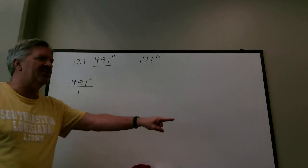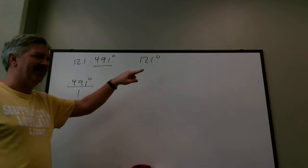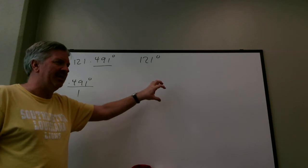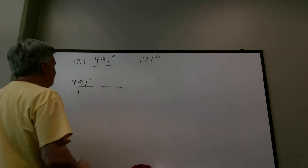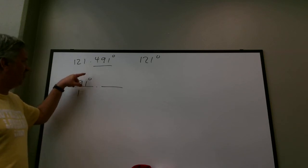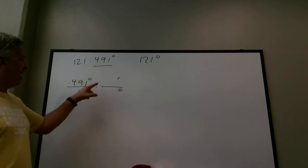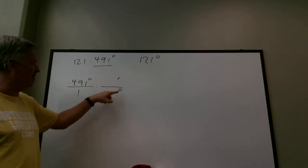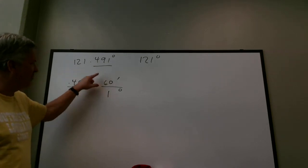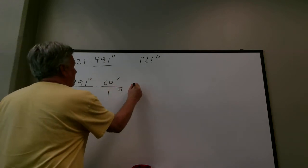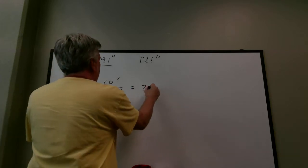Notice in the previous problem we went seconds to minutes to degrees. Now we go decimal degrees to minutes to seconds. To get rid of degrees and go to minutes, degrees is in the numerator so I put it in the denominator, and ask how many minutes per degree: 60 minutes equals one degree. So 60 times 0.491 equals 29.46 minutes.